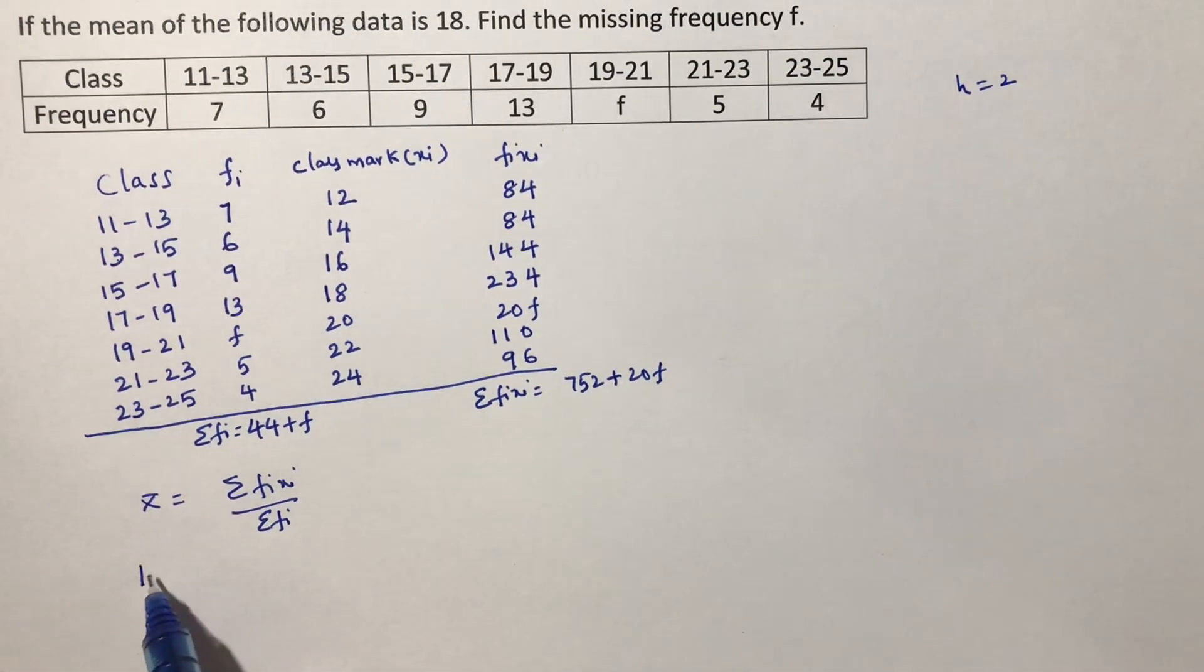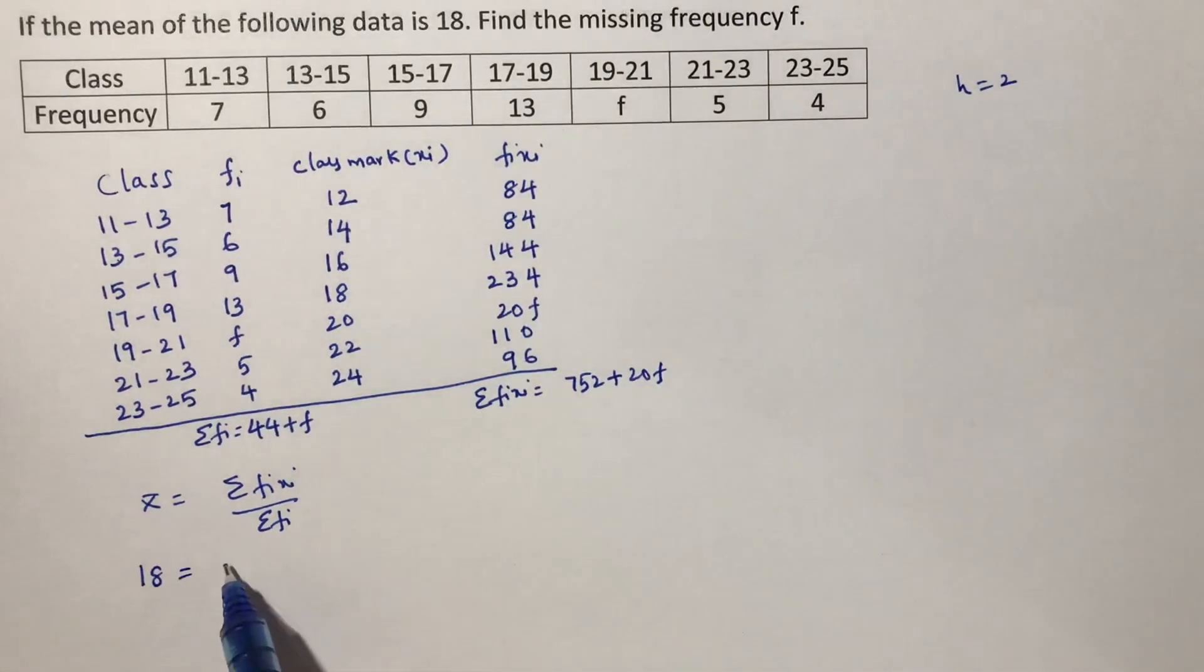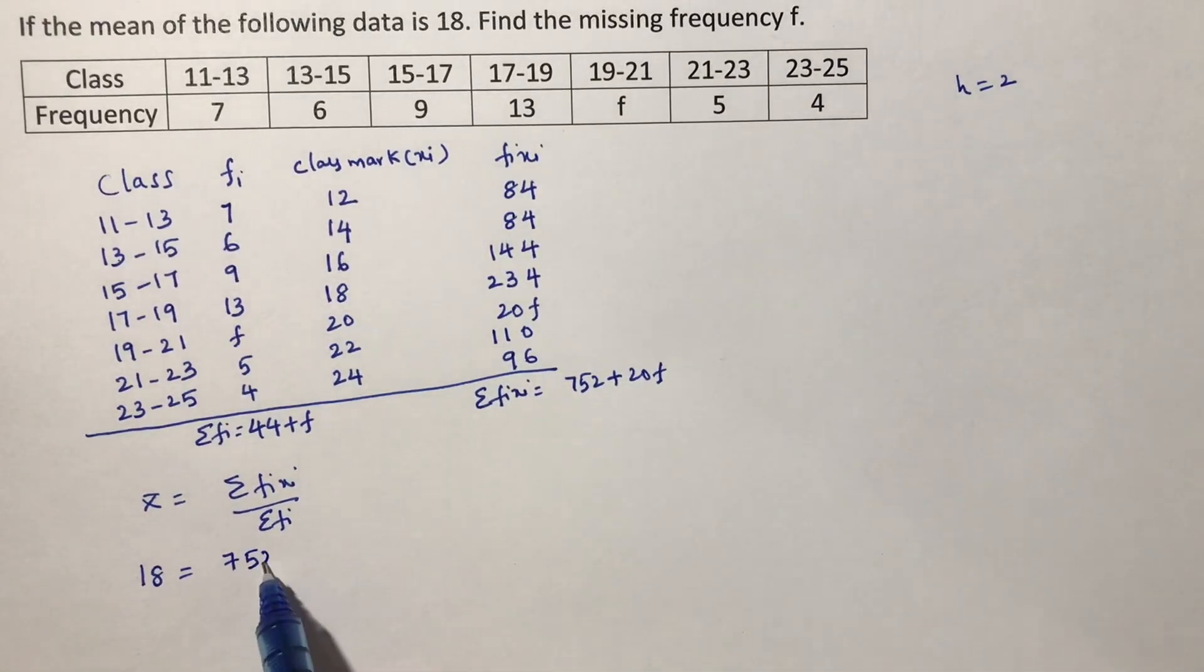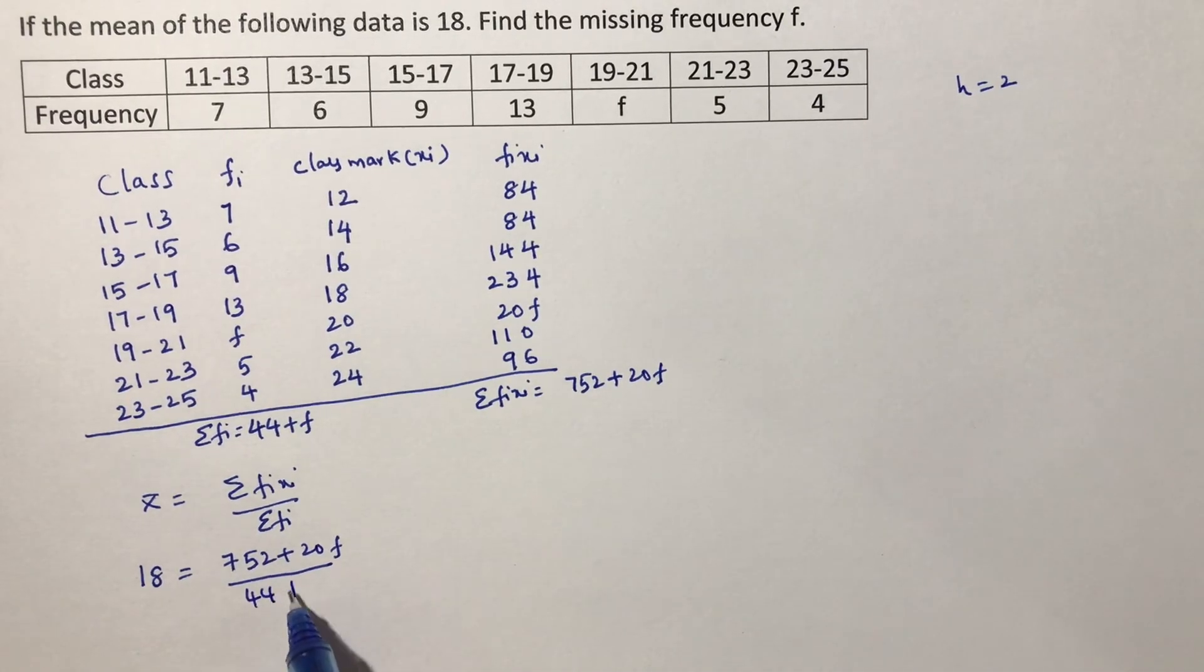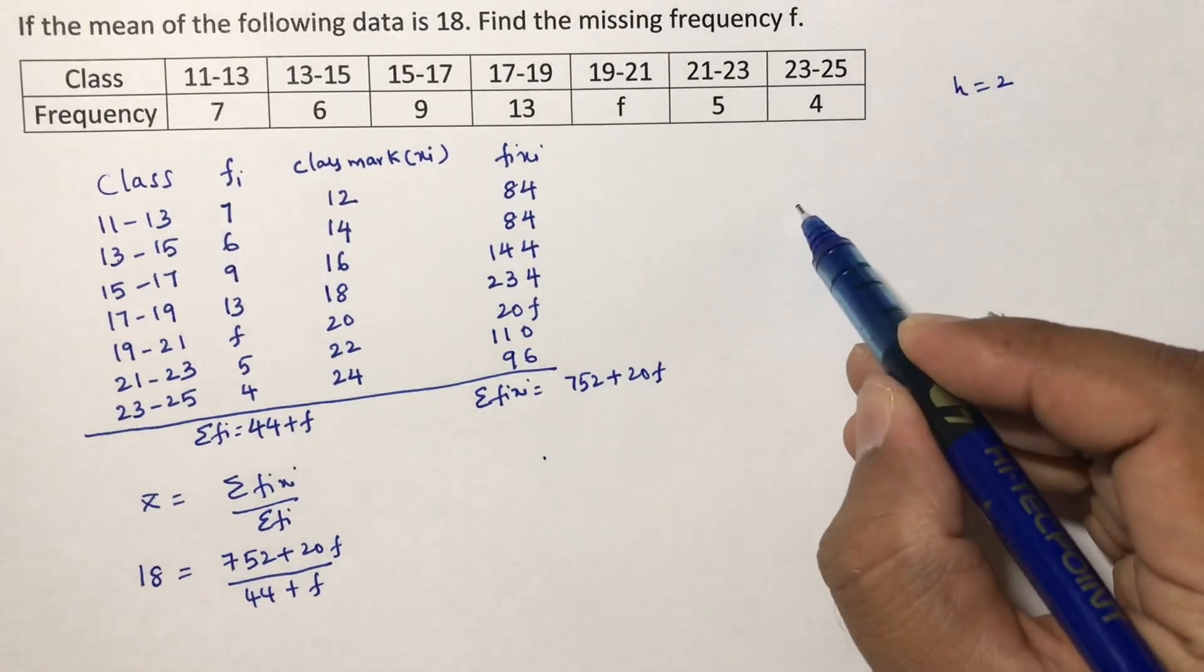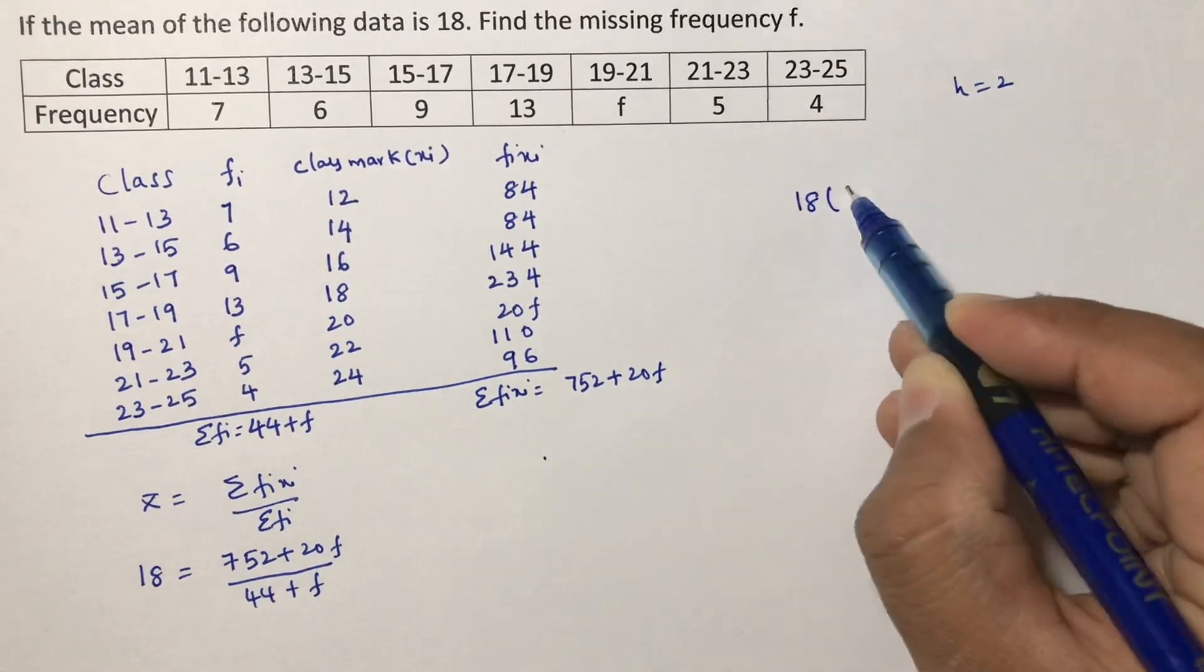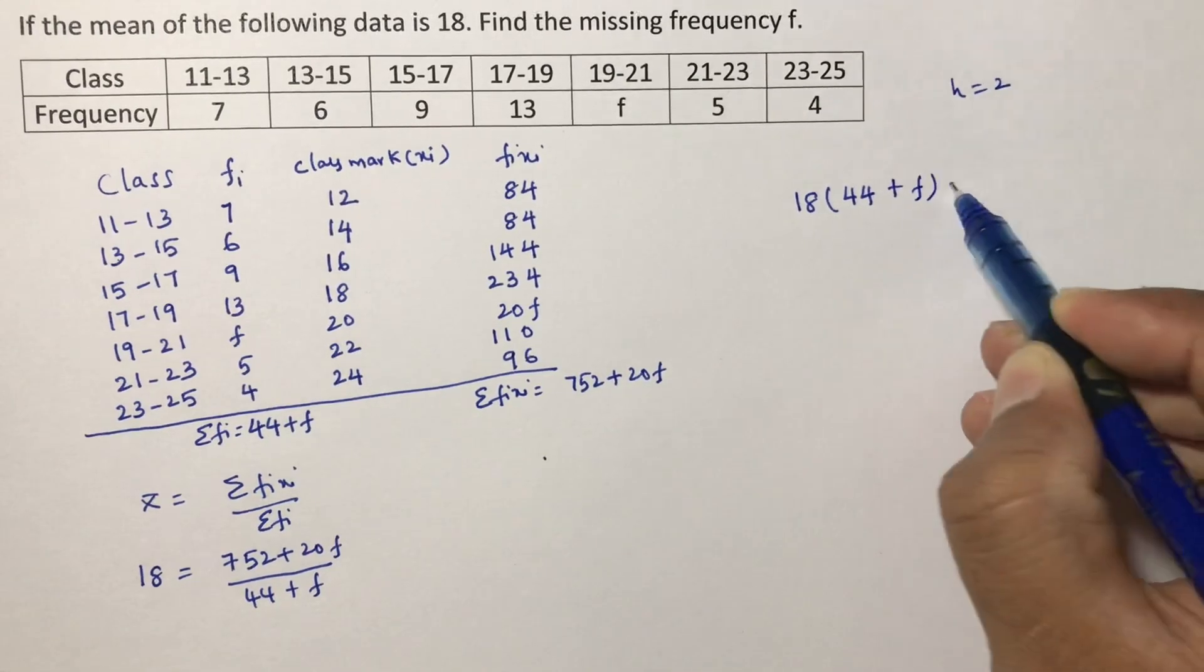Substitute in the mean formula. Mean is how much? 18. Mean of the following data is 18. 18 equals 752 plus 20F by sigma Fi. Sigma Fi is 44 plus F.